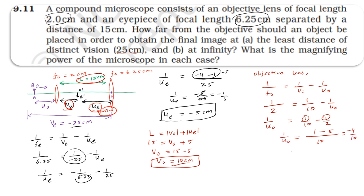So 1/u0 = 1/10 minus 1/2. Taking LCM of 10: 1/u0 = (1 minus 5)/10 = minus 4/10. Therefore u0 = minus 10/4 = minus 2.5 cm. The object should be placed at minus 2.5 cm from the objective lens when the final image is at 25 cm.